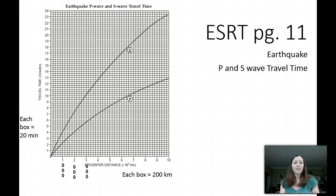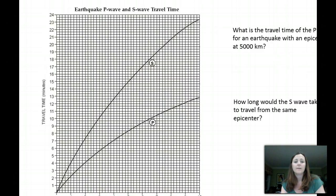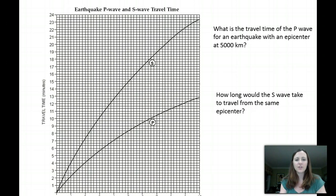Okay. So now that we have all of the intervals and our chart established on what the distance is and what the time is, let's look at some practice problems that we may encounter when we do this unit. So let's look at the first problem. What is the travel time of the P wave for an earthquake with an epicenter at 5,000 kilometers? Well, to start, we need to find 5,000 kilometers on our chart. And if you notice, at the bottom, at our x-axis, here is 5,000 kilometers.